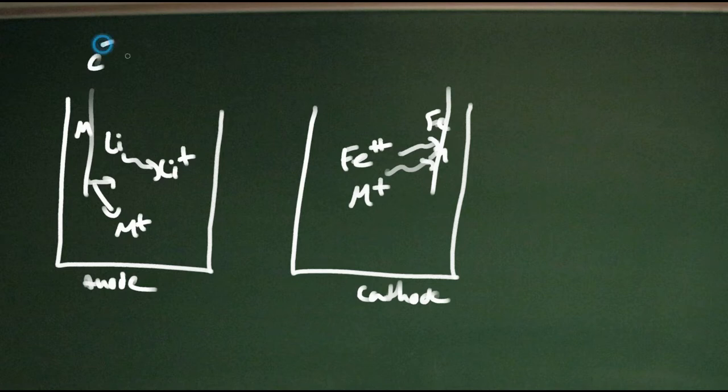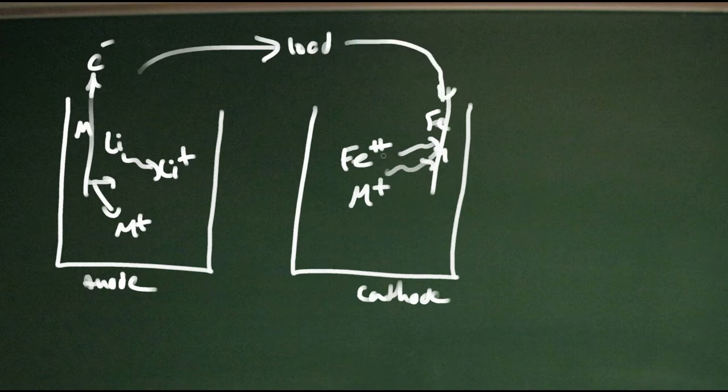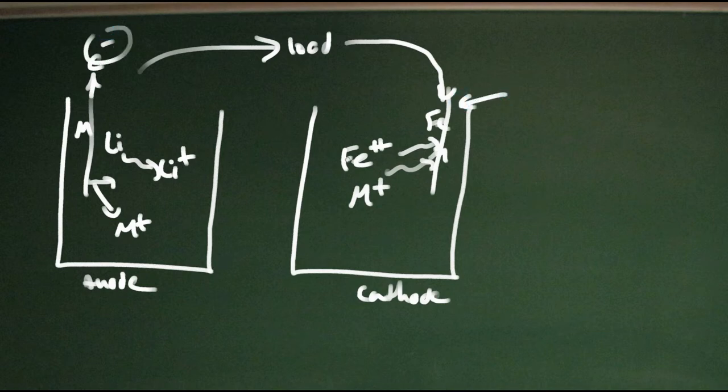Now when that happens, of course you have electrons coming out, and they have to go somewhere, so they go through your load. It could be your voltmeter, ammeter, resistor, or whatever, flashlight. And they go in to be taken up by that reduced metal. Here's the thing, if this is all we had, the whole battery would shut down very quickly because these negative charges would quickly accumulate on this side and shut the whole thing down.